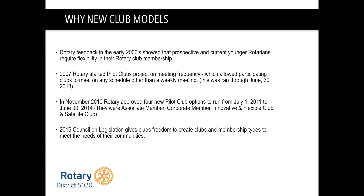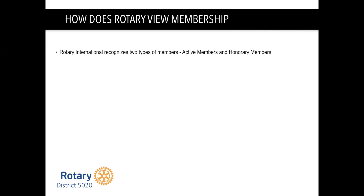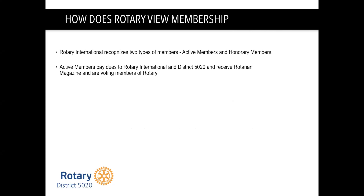So now we have lots of different flexible types of clubs and types of memberships in clubs. For Rotary, there are really only two kinds of members: active members and honorary members. Active members pay dues to Rotary International and to our district, and those members receive the Rotarian magazine and are voting members of Rotary.